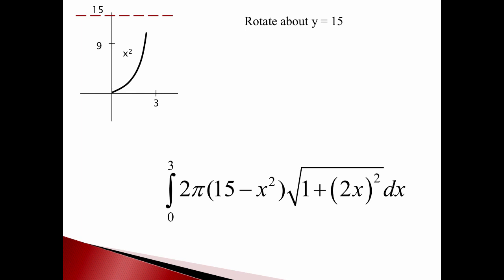So, again, still big number minus little number. What's my bigger number? The 15. The smaller number is the x squared. So 15 minus x squared is the radius of my peel as I wrap it around.